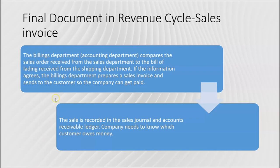Now the goods have been ordered, approved, and shipped. The billings department — the accounting department — gets involved. They compare the sales order received from the sales department to the bill of lading received from the shipping department. If the information agrees, the billings department prepares the third document in the cycle: the sales invoice.